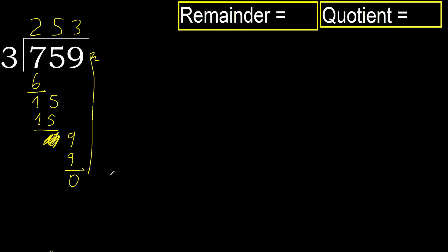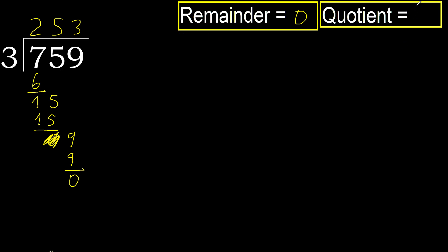There is no next number, therefore finish. Therefore 759 divided by 3 is 253.